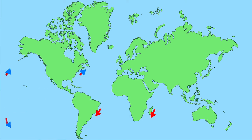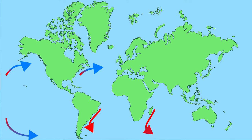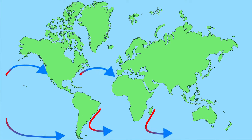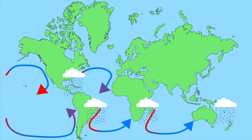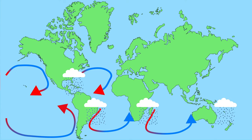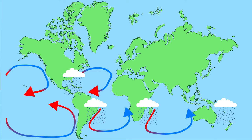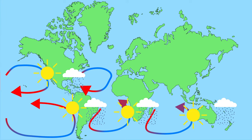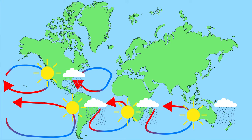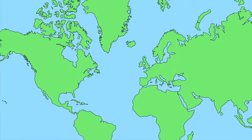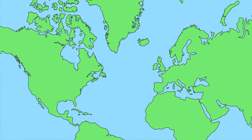Ocean currents flowing from the equator are heated and are called warm ocean currents, and they generally flow along the eastern coasts of continents. Because warm water evaporates more easily, it can also rain. Thus, the east coasts of many continents often receive more precipitation than the west coasts, where there are cold ocean currents.